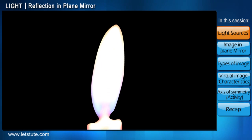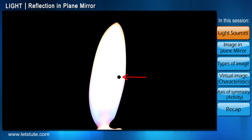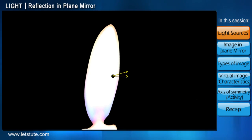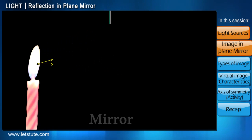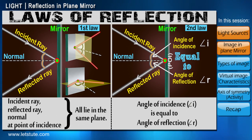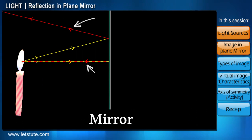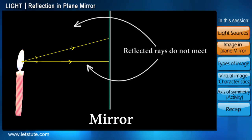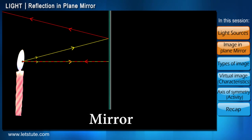A candle flame is bright on the whole, so even a tiny point on the flame gives off billions of light rays. For simplicity, we'll consider only two rays emitted by this point. These rays will strike the mirror and will be reflected back following the laws of reflection. If we observe carefully, we see that the reflected rays do not meet — they go their own separate ways.